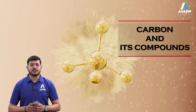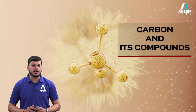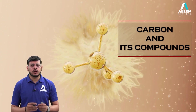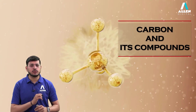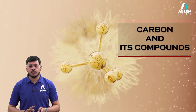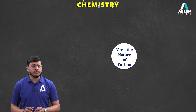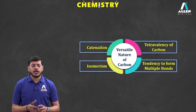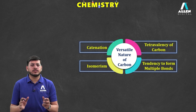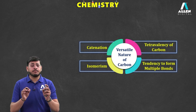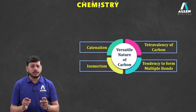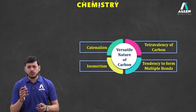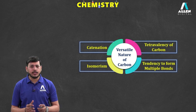In this session on carbon and its compounds, we will be learning about the versatile nature of carbon — why carbon is so special that it forms around 3 million compounds. Carbon is known as the fourth most abundant element in the universe and in all living organisms. There are four reasons for carbon's versatile nature.